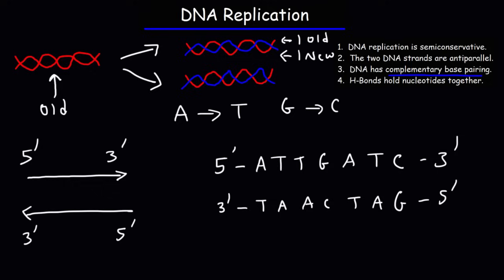The next thing you need to know is what holds nucleotides together — the answer is hydrogen bonds. Between adenine and thymine there are two hydrogen bonds, and between guanine and cytosine there are three hydrogen bonds holding them together. Those hydrogen bonds are what hold the DNA strands together.